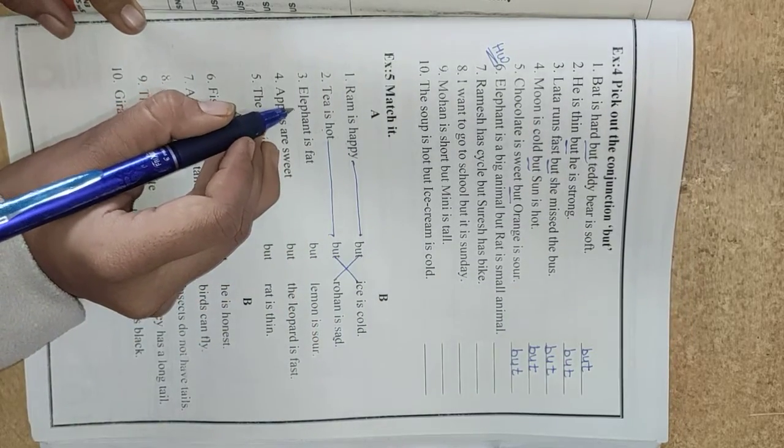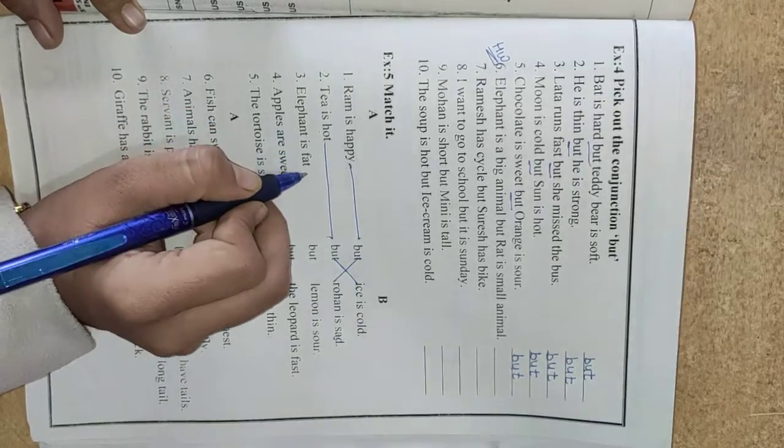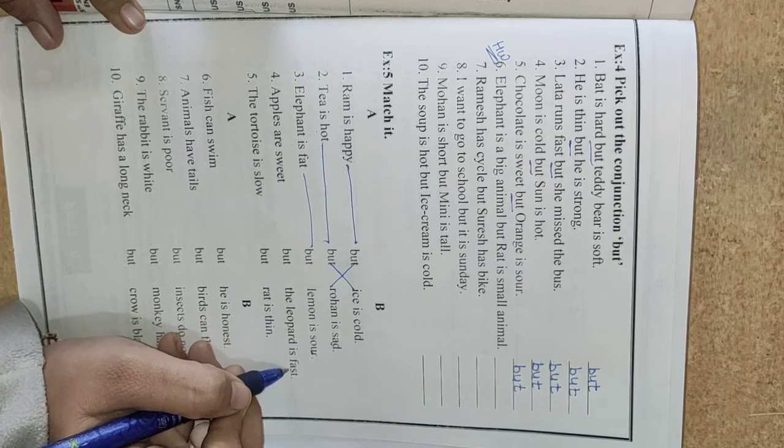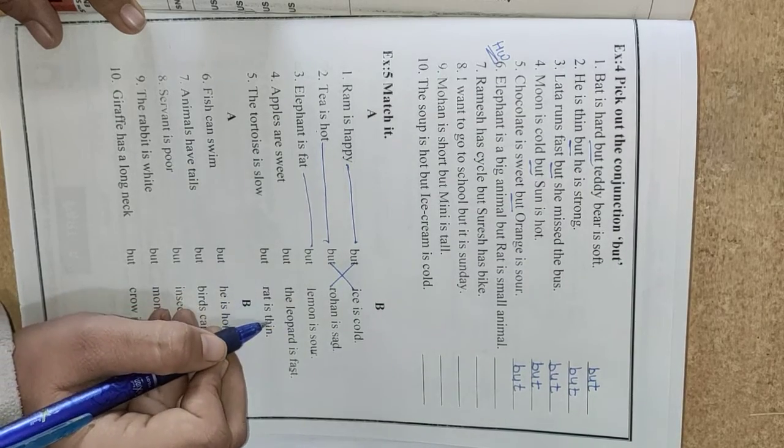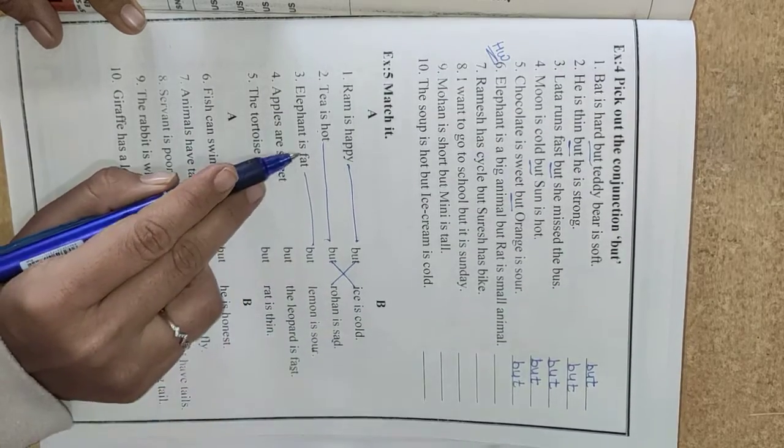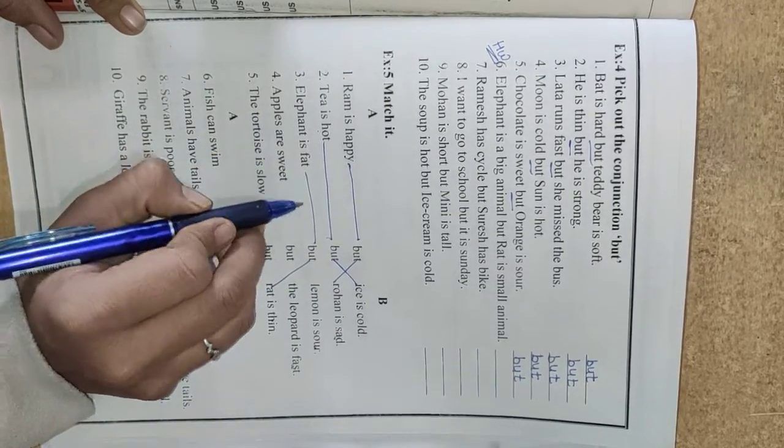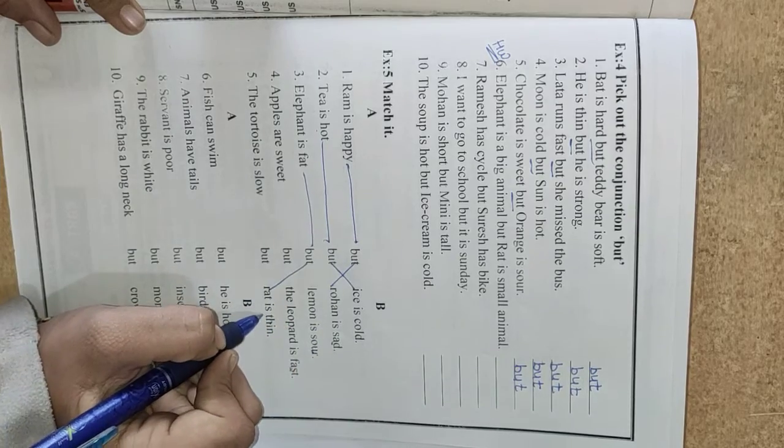Number 3. Elephant is fat but lemon is sour? No. Leopard is fast? No. Rat is thin? Yes. Fat opposite thin. So match with rat is thin. Elephant is fat but rat is thin.